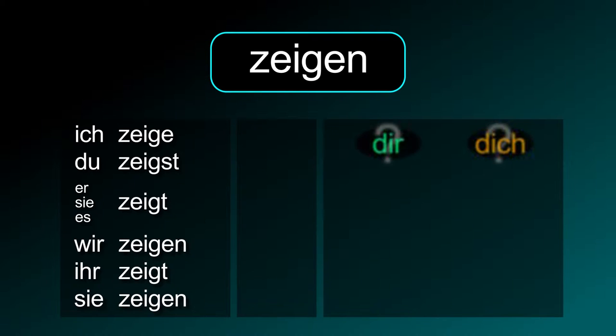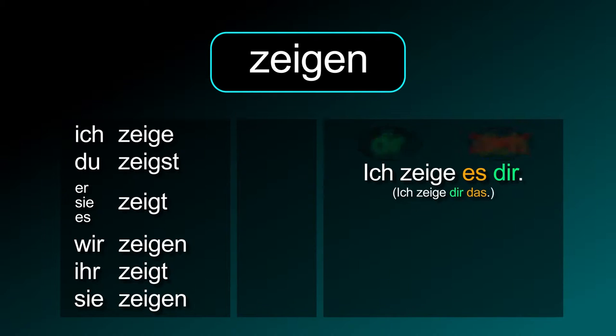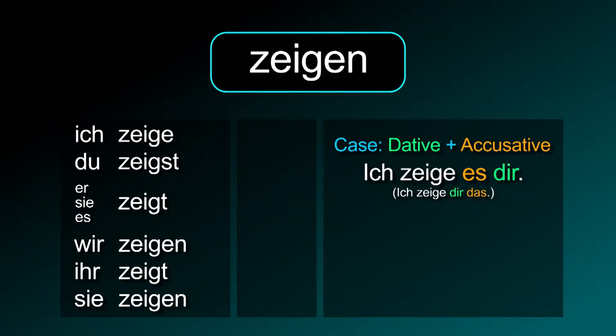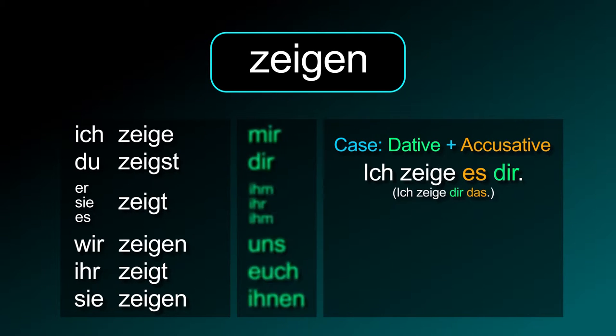This verb needs the dative and the accusative case. Therefore, the correct way to say 'I show it to you' is: ich zeige es dir, or ich zeige dir das.